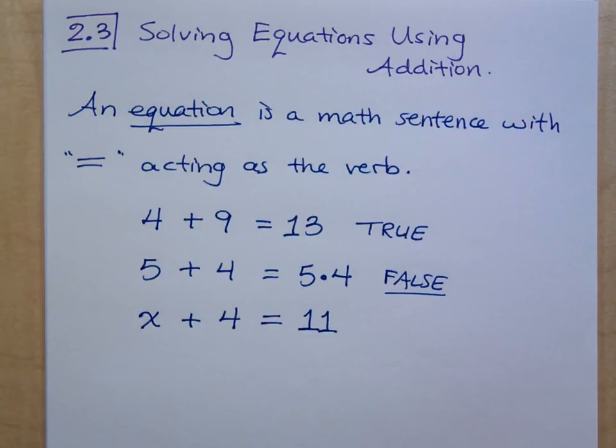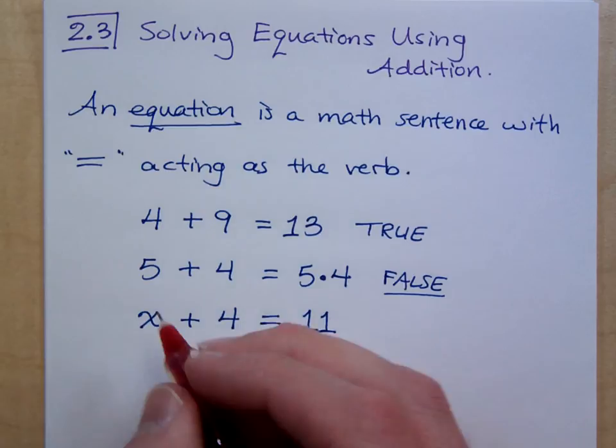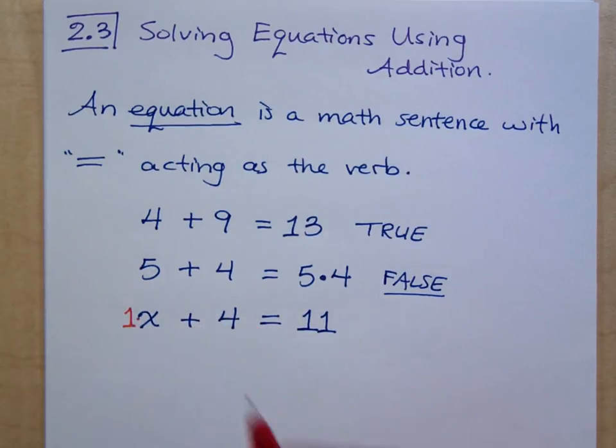And I think what you mean when you say that, because a lot of times students will say that to me, x is not 1, but it has a coefficient of 1. But x is a variable, and x could be anything, right? So, is x plus 4 equal to 11 true or false? Valerie says it's true. You sure about that? Well, you said it represents an unknown number. So, it could represent, like, 7. It could represent 7.